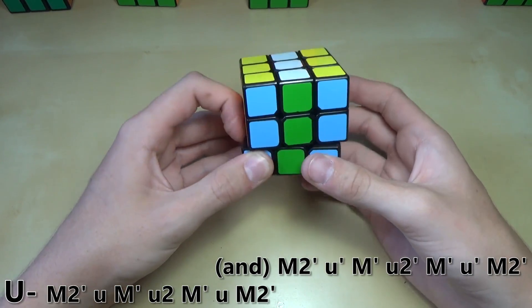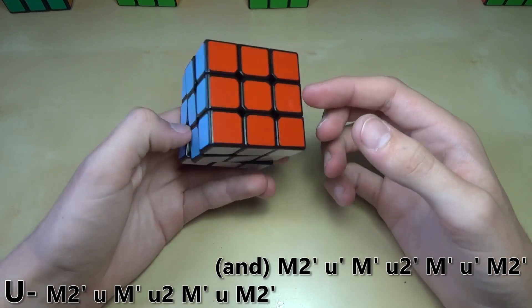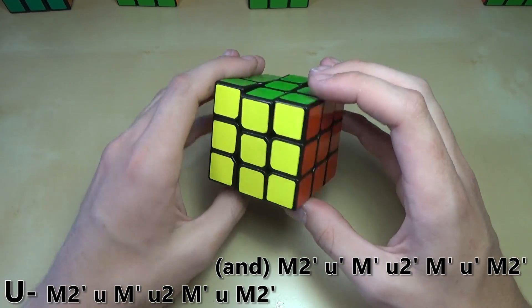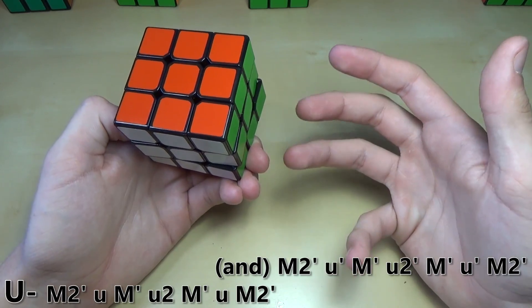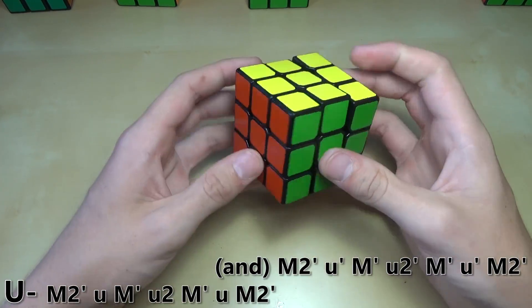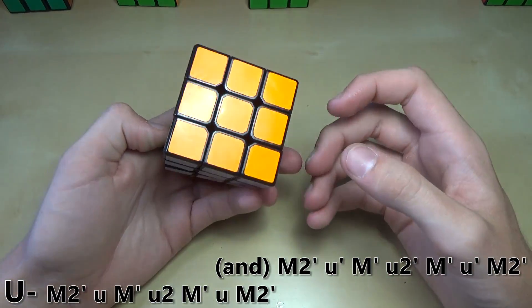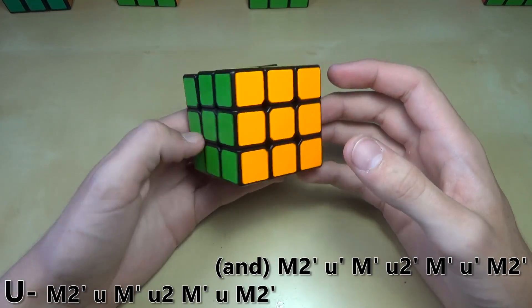I'm really slow at it. I can't do the finger tricks at all. But it does work pretty well. I use a different algorithm for the U-A-perm still. But if you are good at doing M2s with your right hand you can use that one too. So yeah that's the U-perm. You can do both of them using that finger trick. But I just use the U-B-perm.